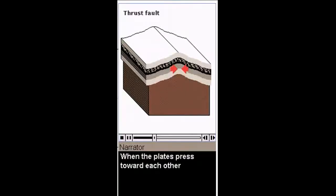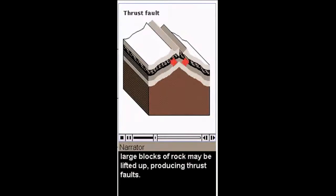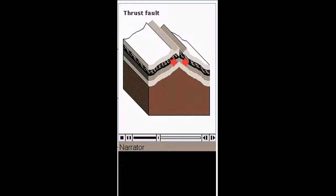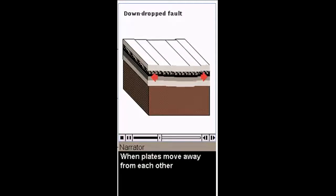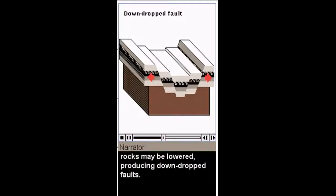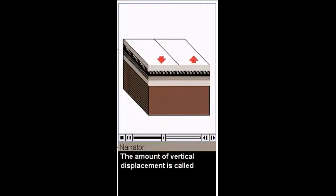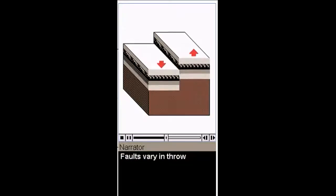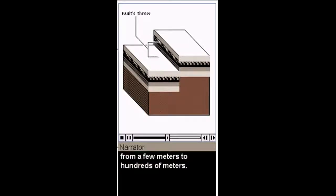When the plates press toward each other, large blocks of rock may be lifted up, producing thrust faults. When plates move away from each other, rocks may be lowered, producing down-dropped faults. The amount of vertical displacement is called the fault's throw. Faults vary in throw from a few meters to hundreds of meters.